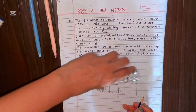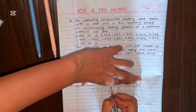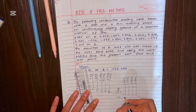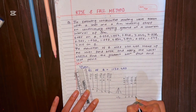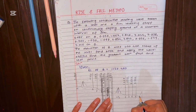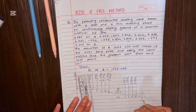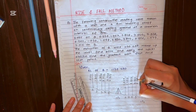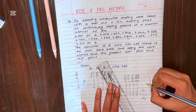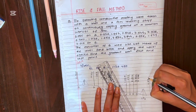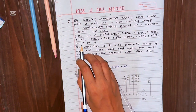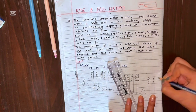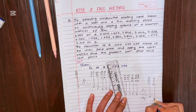The reading of 3.844 is the last foresight from this instrument position. The instrument is now moved to changing point 2 (CP2). The backsight from the third instrument position is 0.956, the intermediate reading is 1.579, and the final reading of 3.016 on station B is the last foresight — station 10 and point B.